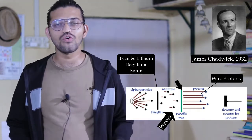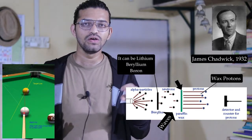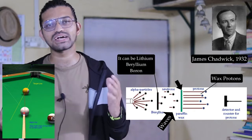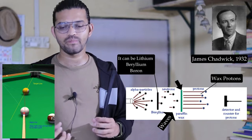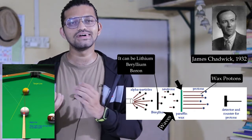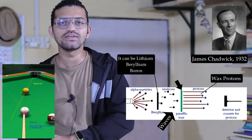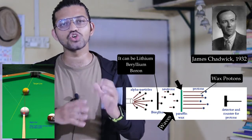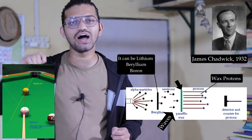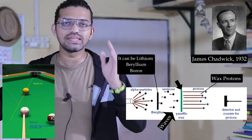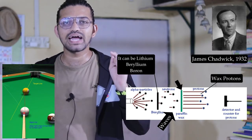Let's take an example from pool: a stripe ball gets hit by a cue ball that has the exact same mass, shape, and weight as the stripe ball. After being hit, the stripe ball's velocity increases. Similarly, in Chadwick's experiment, the protons released from the paraffin wax had higher velocity, meaning something with the exact same mass and size as a proton bombarded them.